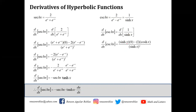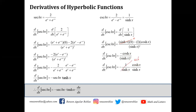For the derivative of csch(x), using its reciprocal identity 1/sinh(x) and applying the quotient rule: sinh(x)·0 minus 1·cosh(x), all over sinh²(x). This gives -cosh(x)/sinh²(x), which can be written as (-1/sinh(x))·(cosh(x)/sinh(x)), equal to -csch(x)·coth(x). In general, the derivative of csch(u) is -csch(u)·coth(u)·du/dx.